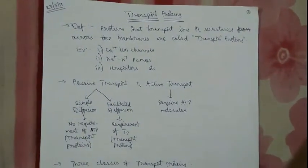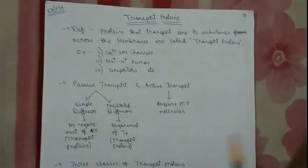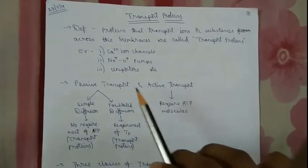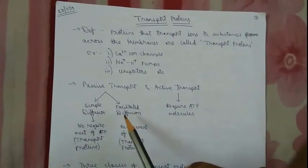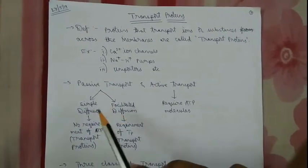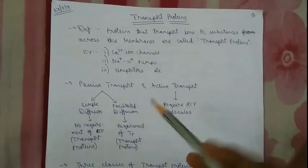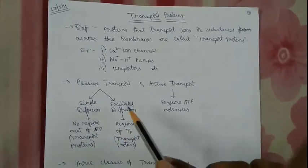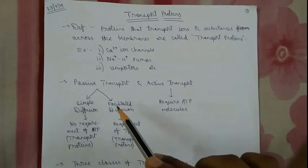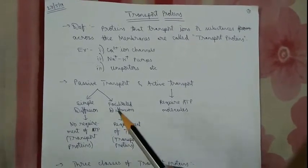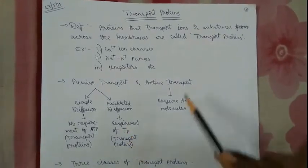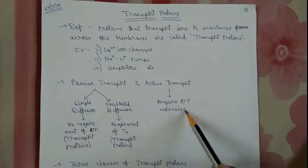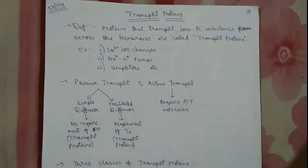Before going into transport proteins, let us learn what transportation is and how many types there are. There are two kinds: passive transport and active transport. Passive transport is classified into two types — simple diffusion and facilitated diffusion. Simple diffusion is transportation from higher to lower concentration without transport proteins. Facilitated diffusion requires no ATP but requires transport proteins. Active transport requires ATP molecules for transporting ions or molecules.